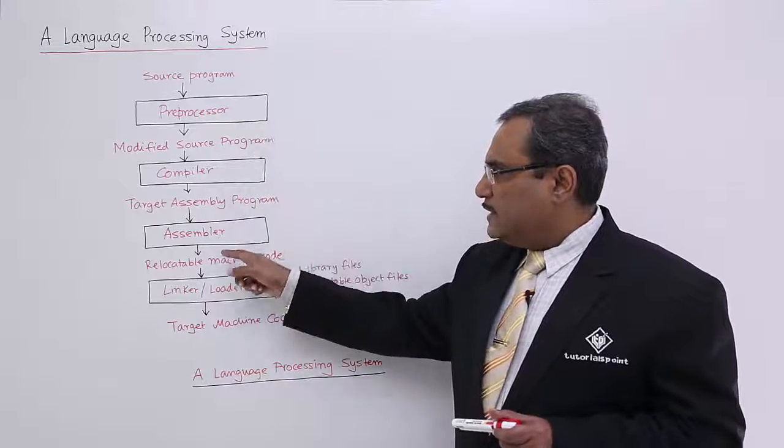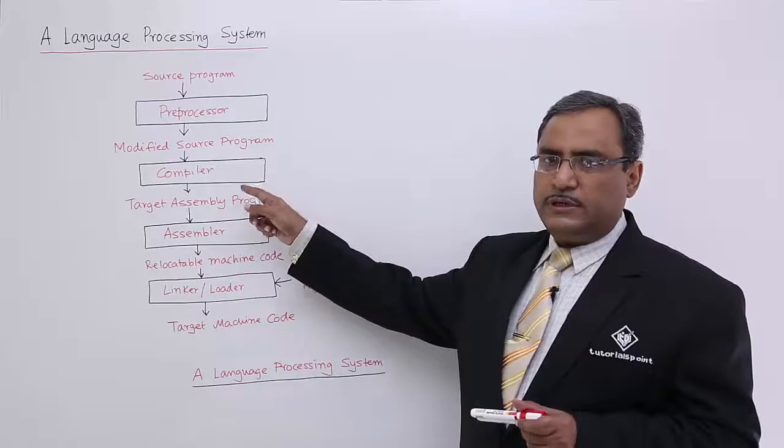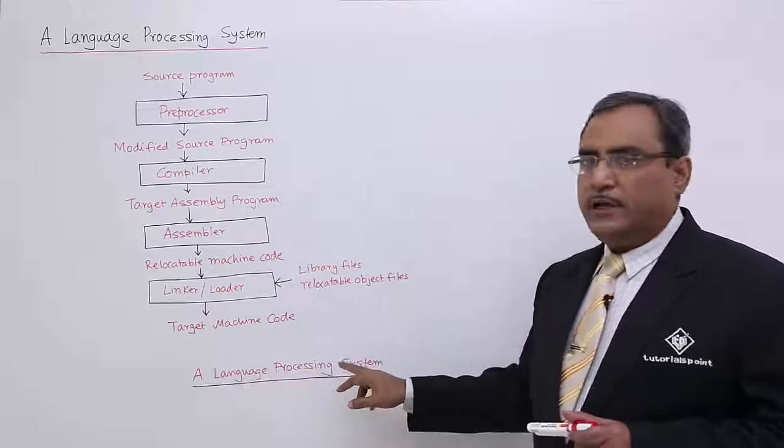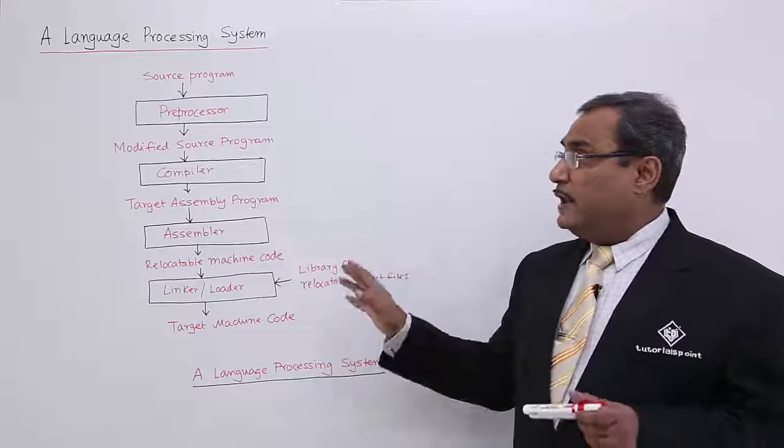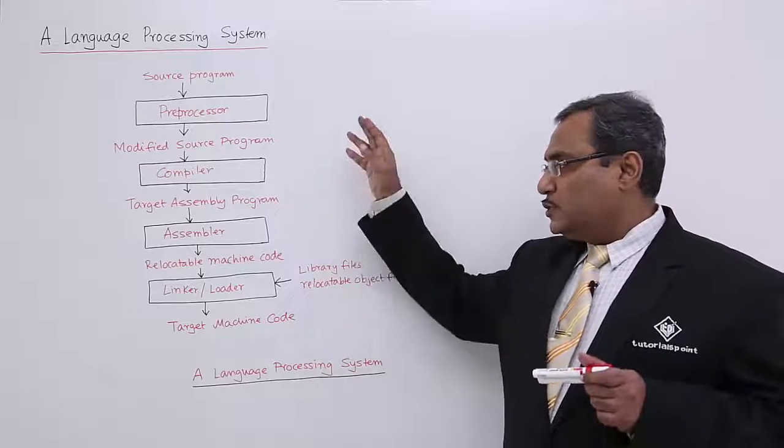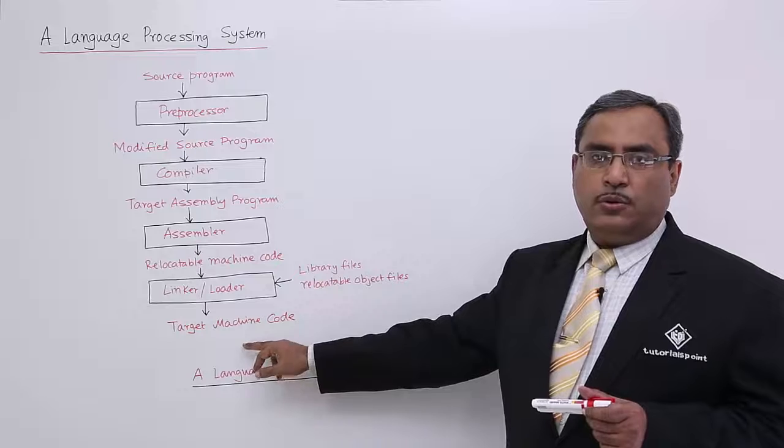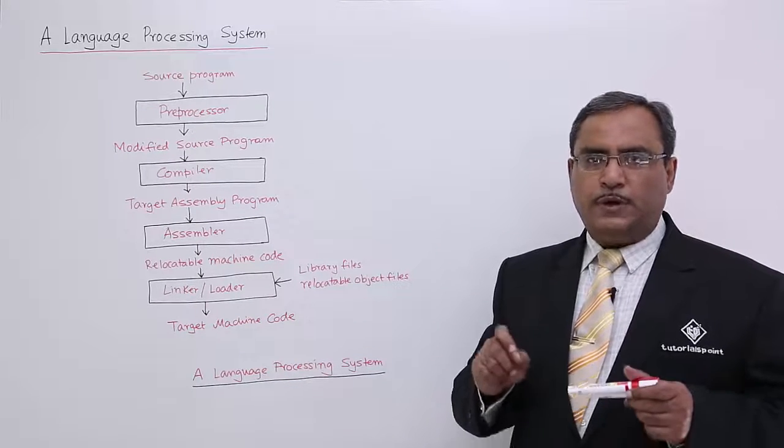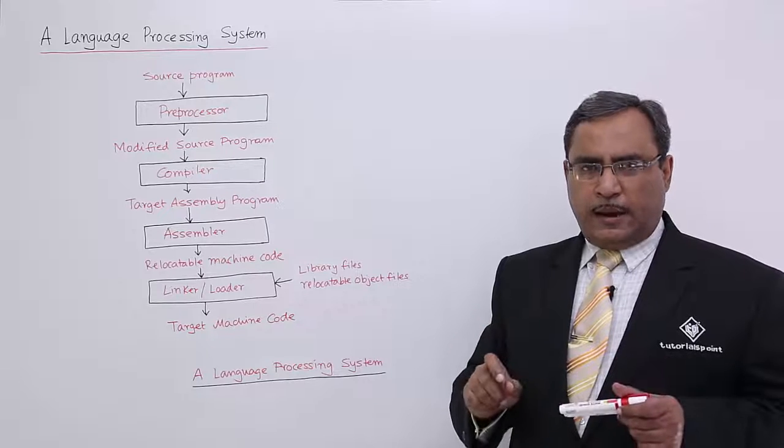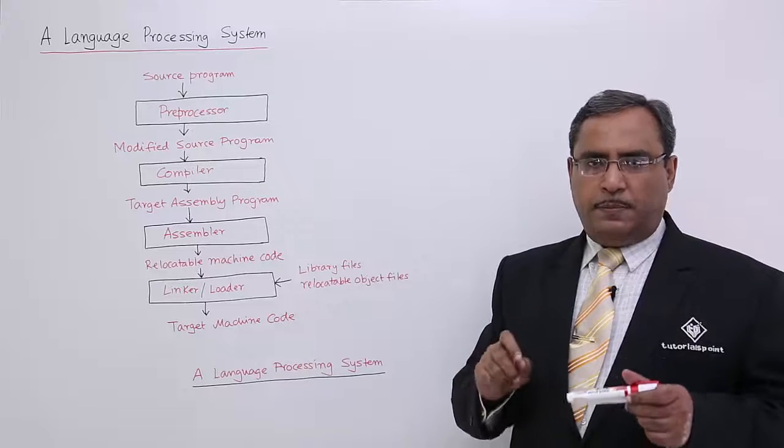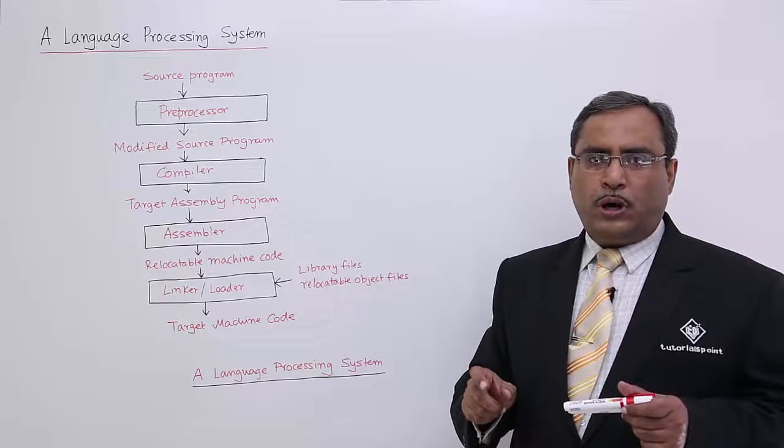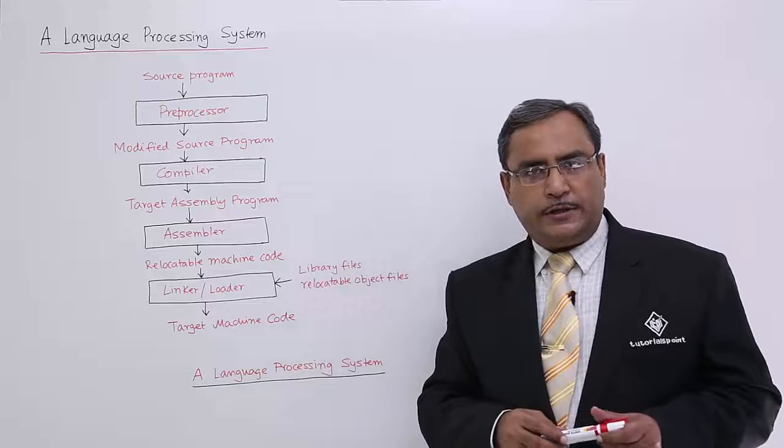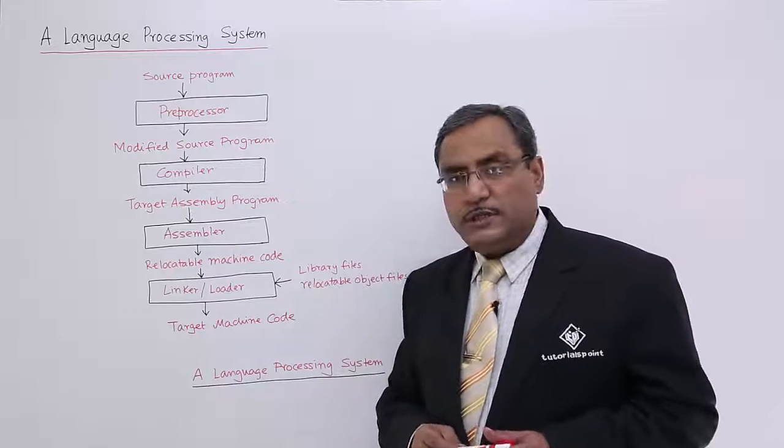These are the different phases, these are the different softwares which will be linked or which will be helping this total language processing environment. So, this is my language processing system in which my source program will get converted to ultimately target machine code. And always remember, this machine code is platform dependent, that means depending upon the target architecture, depending upon the operating system in which the program is supposed to run, depending upon that the codes will get generated. And this is my language processing system.